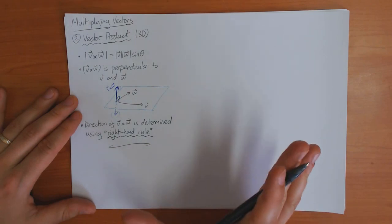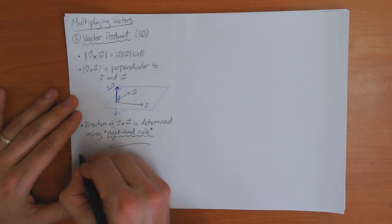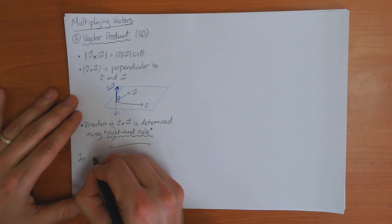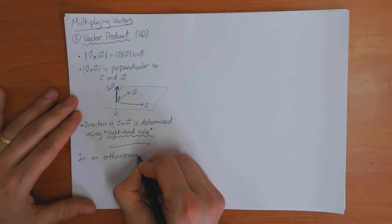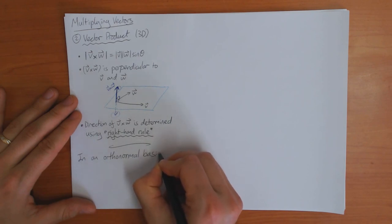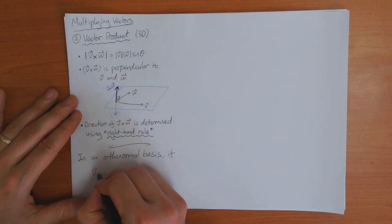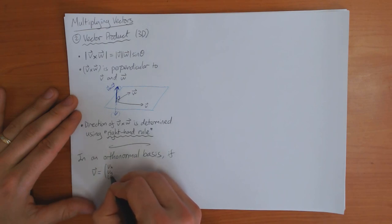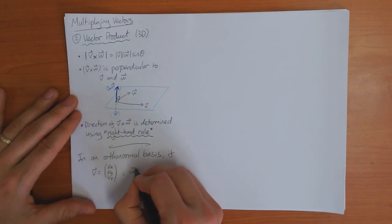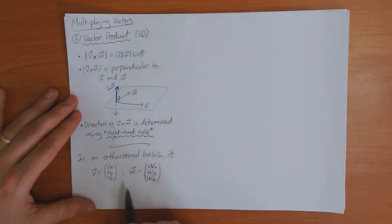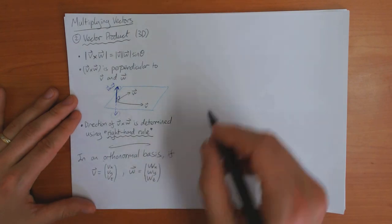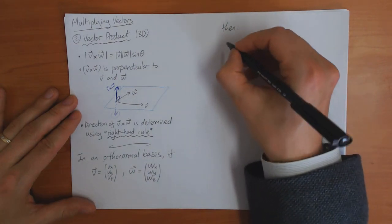However, if I have the components of v and w in an orthonormal basis — suppose I have the vector v = (vx, vy, vz) and w = (wx, wy, wz) — if I have these vectors' components in an orthonormal basis (orthonormal is essential), then you can show the following.